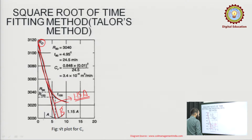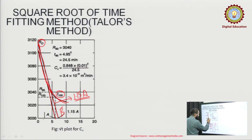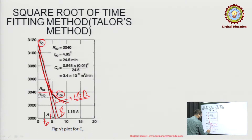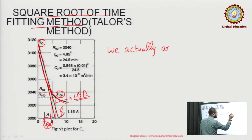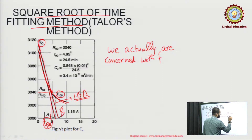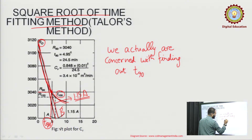Now you can see we have obtained the 1.15a line. After producing this line, it cuts the initial curve at a point which gives R90 — the reading for 90 percent consolidation — and corresponding to this you get t90 on the x-axis. In the square root of time fitting method, we are concerned with finding out t90.